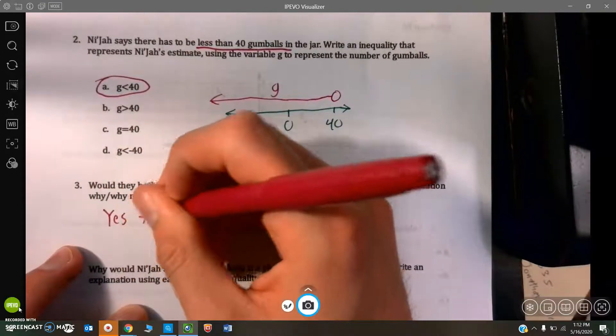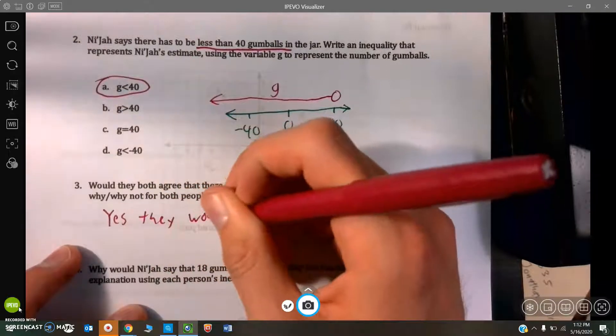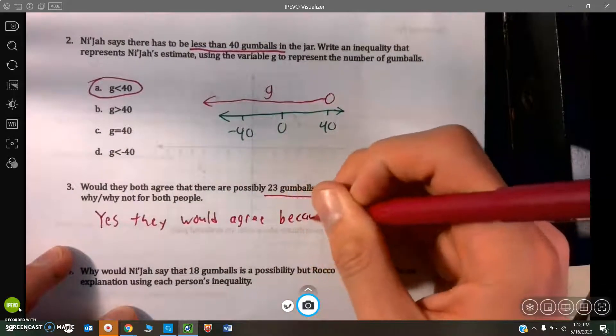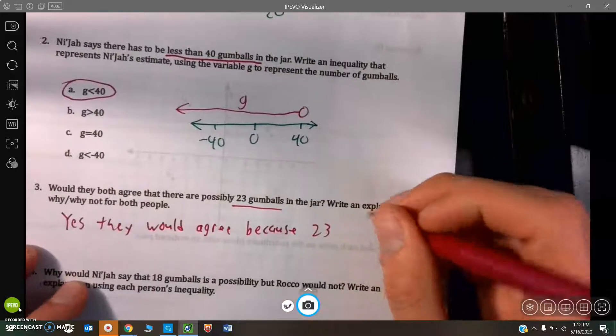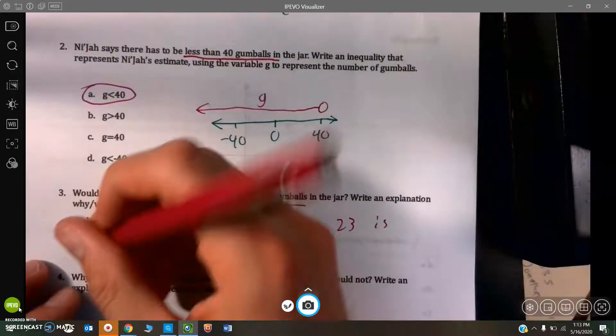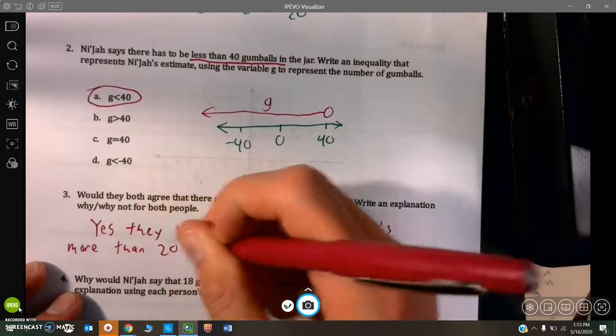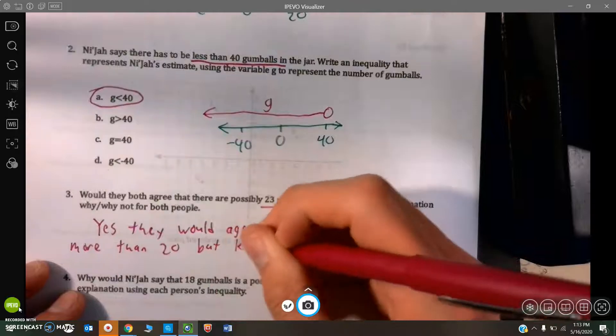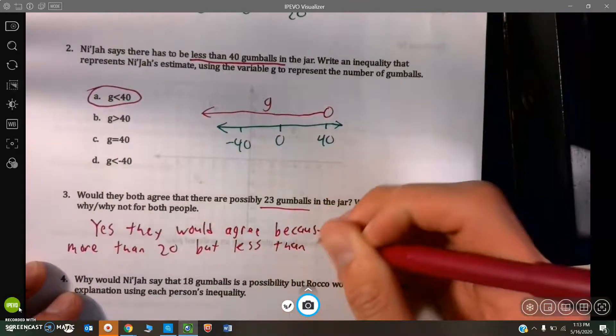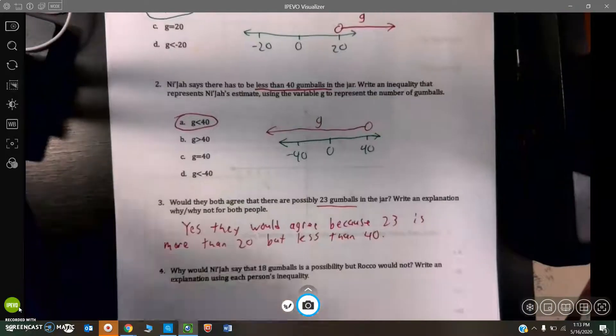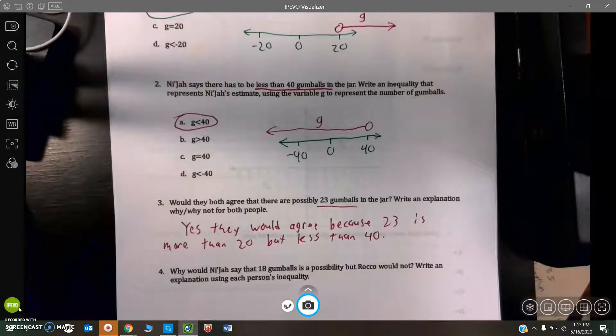Yes, they would agree, because 23 is, like we just said, more than 20, but less than 40. It falls right in between their two estimates. And then we can also substitute in 23 gumballs into both of their inequalities to make sure that it does produce a true statement.